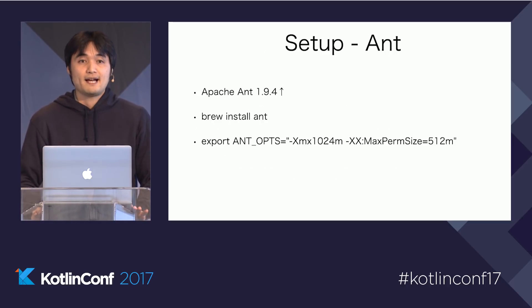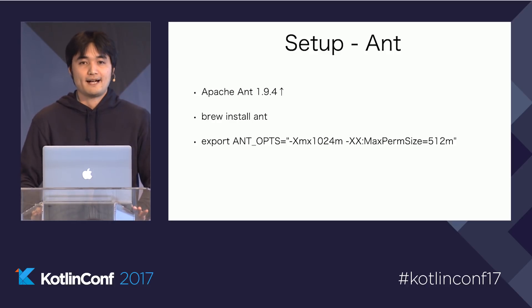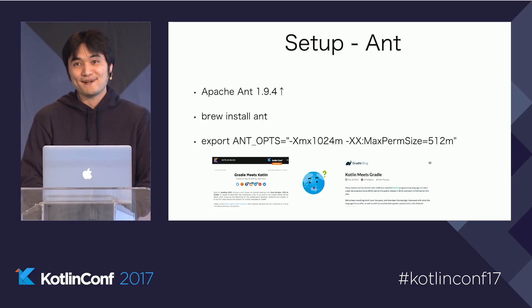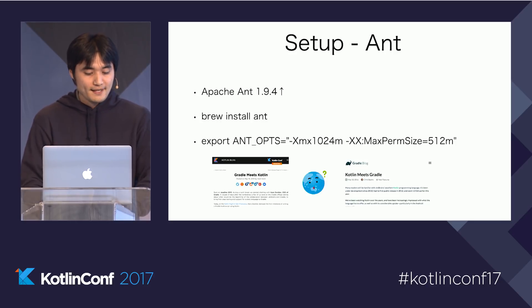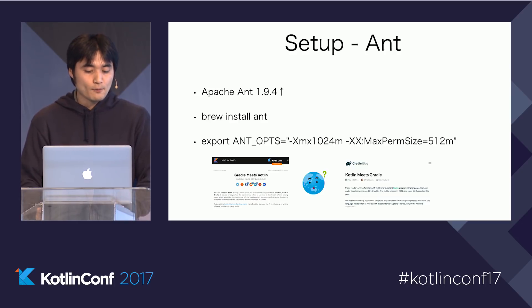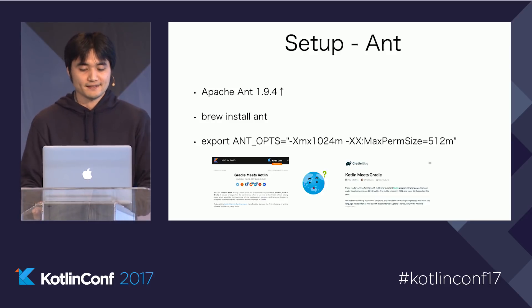The next setting is Ant. Kotlin uses Ant to build. Ant version must be higher than 1.9.4. If you use Mac OS, run the Homebrew command: brew install ant. And in most cases, you need a memory setting — add ANT_OPTS environment variable with lots of memory settings like this.